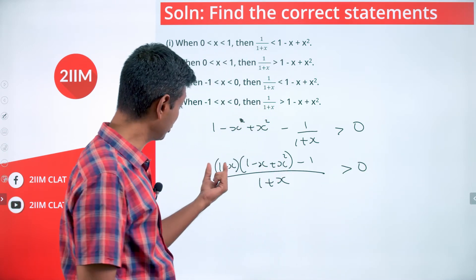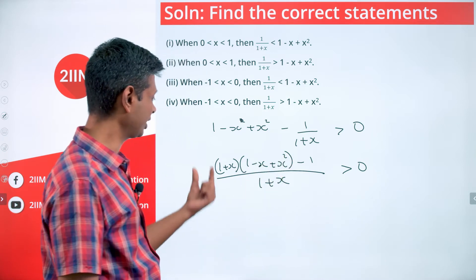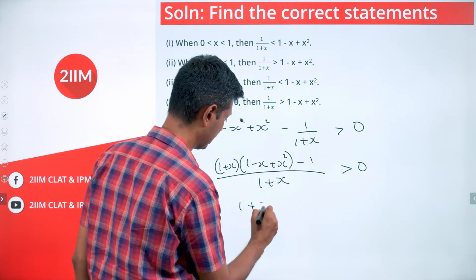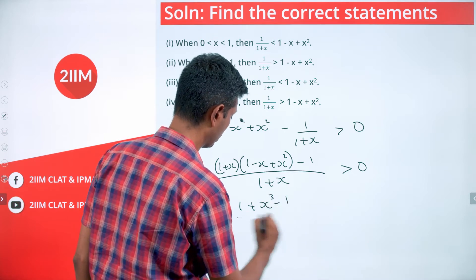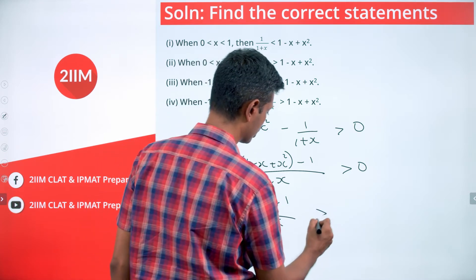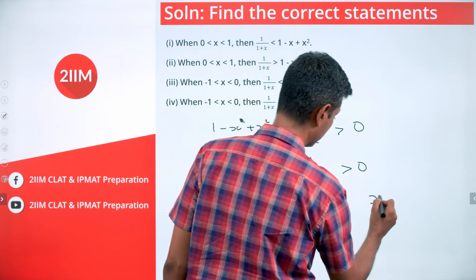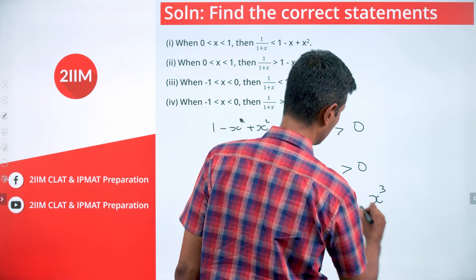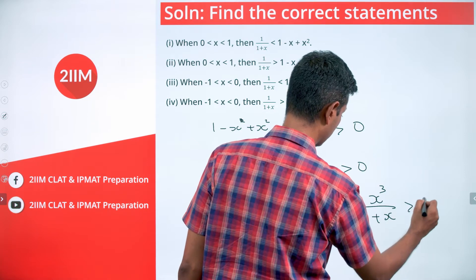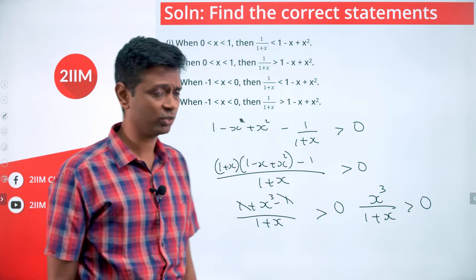Notice that (1+x)(1 - x + x²) follows the identity (a + b)(a² - ab + b²) = a³ + b³. So this becomes (1 + x³) - 1 divided by (1+x), which is greater than 0. This effectively simplifies to x³/(1+x) > 0.